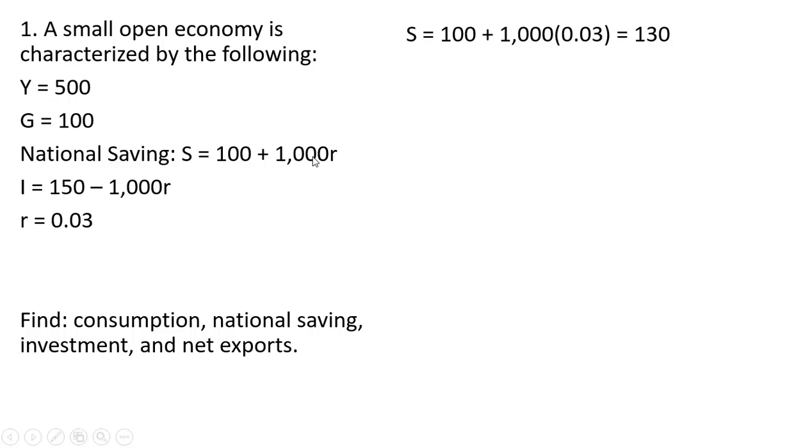We're going to first evaluate the national saving function when r is 3%. So solving here we get 100 plus 30 or 130 for national saving. Investment spending at this r of 3% is going to be 120.